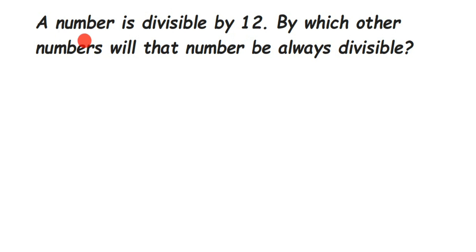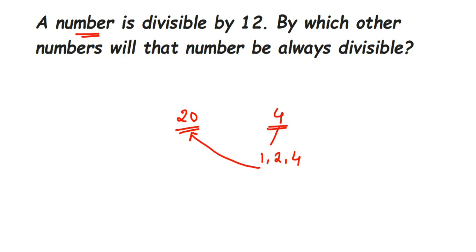To explain this, let's take an example. Suppose we have the number 20. In this question we don't know the number — I'm taking a known example just to explain. So 20 is our supposed number, and let's take 4 here. 4 divides 20, yes — we get 5. Now the question is: by which all numbers can we divide 20? We know 4 divides 20, so what are the factors of 4? Factors of 4 are 1, 2, and 4, which means 1, 2, and 4 can all divide 20.